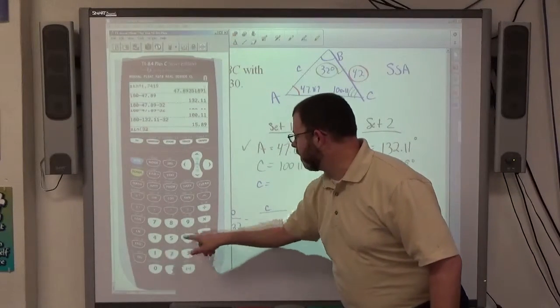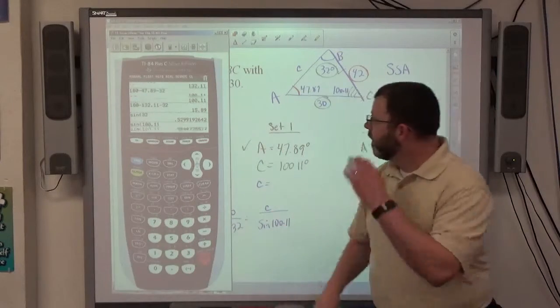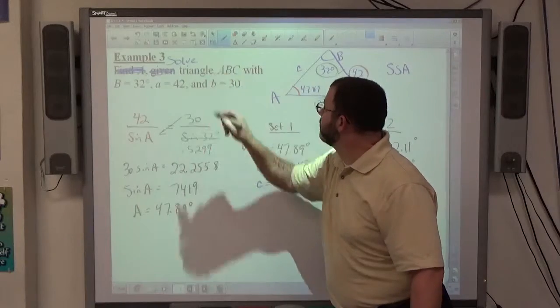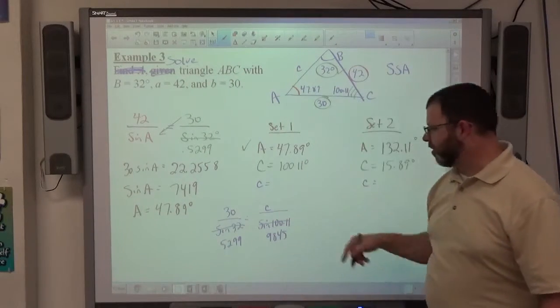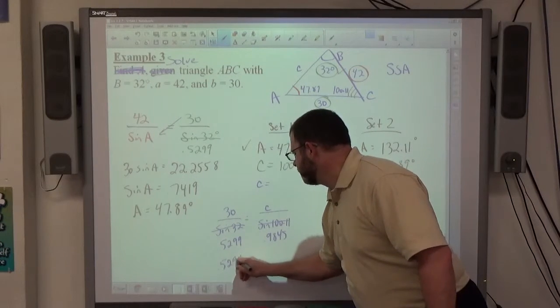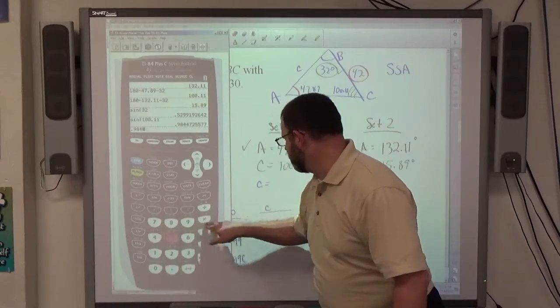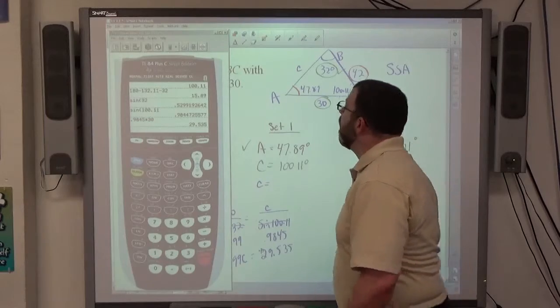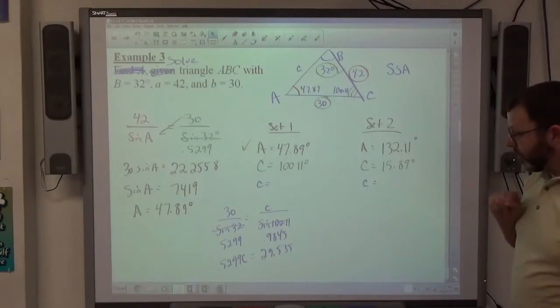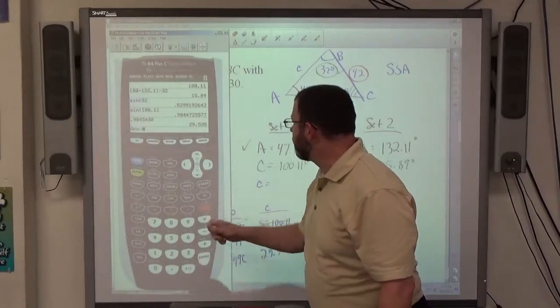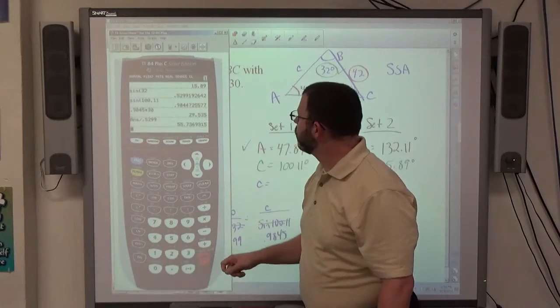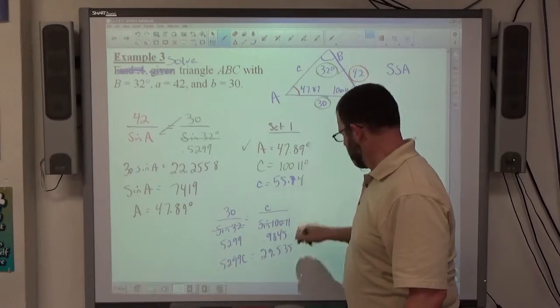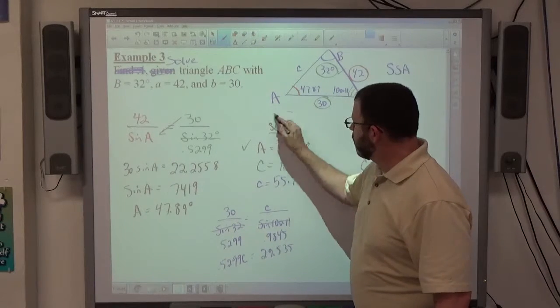Once again, sine of 32 equals something, sine of 100.11 equals something. 0.5299 and 0.9845. That's just a simple proportion. 0.5299C is equal to 0.9845 times 30, which is 29.535. So divide both sides by 0.5299. So 29.535 divided by 0.5299, that comes out to 55.74. So there's a set of answers that's correct.